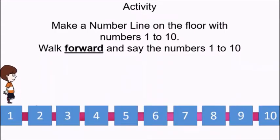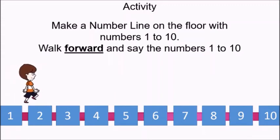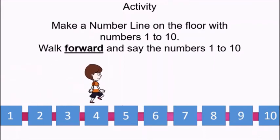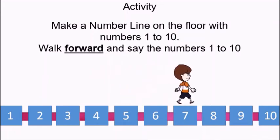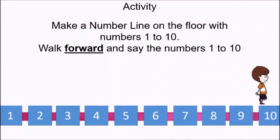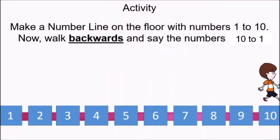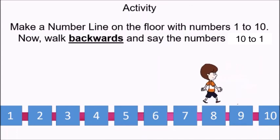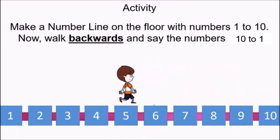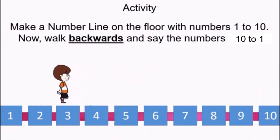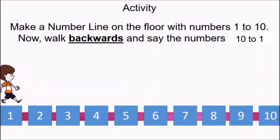Time for another activity. Make a number line on the floor with numbers 1 to 10 and walk forward, saying the numbers 1 to 10: 1, 2, 3, 4, 5, 6, 7, 8, 9, 10. Forward means aage jana — going forward. And after walking forward, now walk backwards. Backward means going back. When you walk backwards, see the numbers: 10, 9, 8, 7, 6, 5, 4, 3, 2, 1. So enjoy this activity.